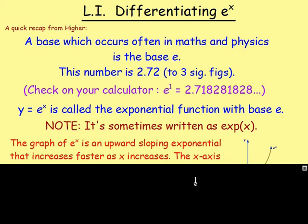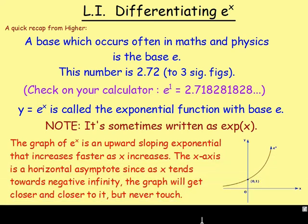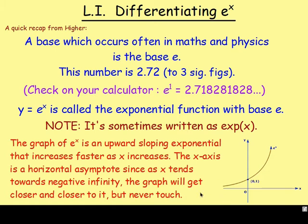In higher maths, we were looking at the graphs of exponentials and the graph of e to the power of x. It's an upward sloping exponential that increases faster as x increases. Note that the x-axis is a horizontal asymptote, which means if you extend it further back to the left, the graph will get closer and closer to it but will never touch.